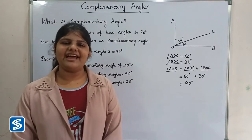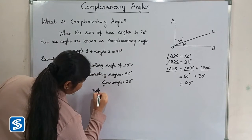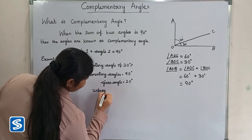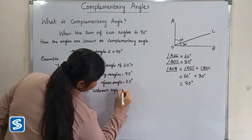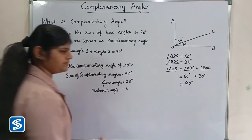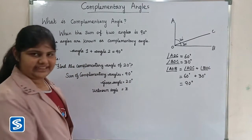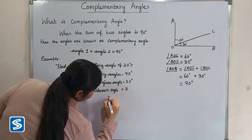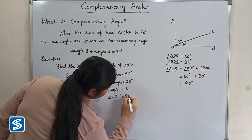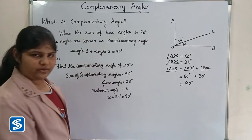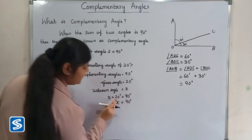We already know that the sum of complementary angles is 90 degrees. The given angle is 20 degrees. Now let us take the unknown angle as x. So x plus 20 degrees is equal to 90 degrees.